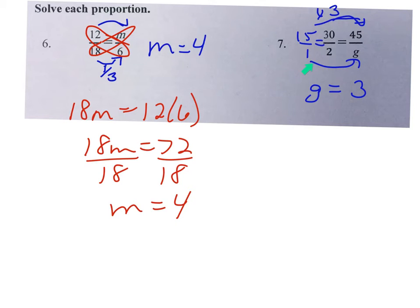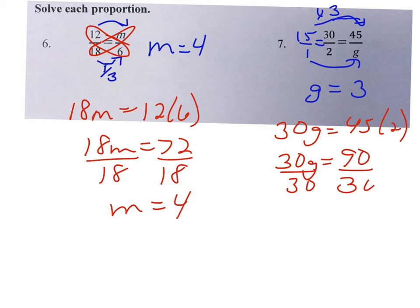Same exact thing with number 7. If you do cross-multiply, you must show all of those answers of 30, G equals 45 times 2, which is, in that second line, equals 90. Divide by 30 twice, G equals 3.